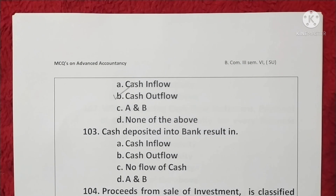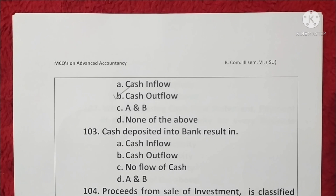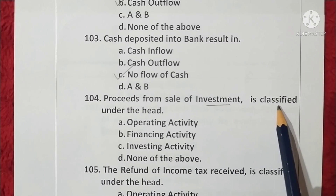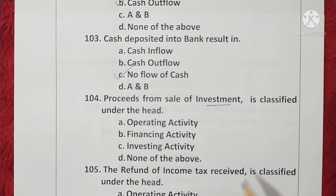Question 103. Cash deposited into bank results in: cash inflow, cash outflow, no flow of cash, or A and B. Cash deposited into bank is a no flow of cash. Option C is correct. Question 104. The proceeds from sale of investment is classified as an investing activity. Option C is correct.